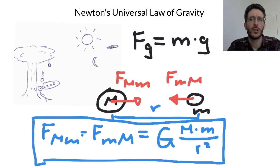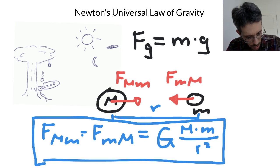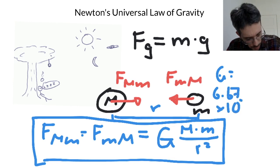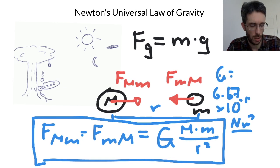And what is capital G? Capital G is one of these universal constants. It turns out that capital G is 6.67 times 10 to the minus 11 newton square meters per kilogram squared.